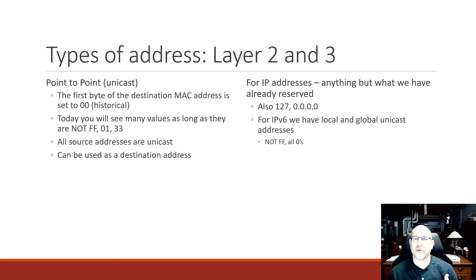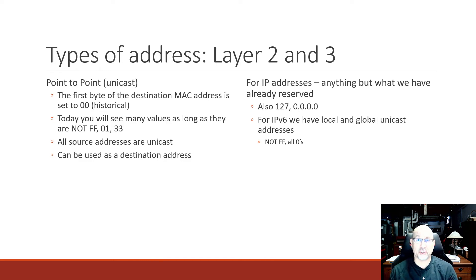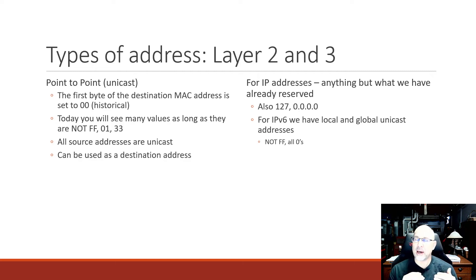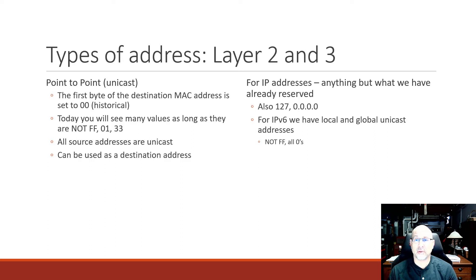Let's talk about unicast, sometimes referred to as point-to-point, because there are just two nodes involved in the conversation. For unicast MAC addresses, historically we used to say those begin with 00, and that was true for a long time, but we began to run out of vendor IDs — the first three bytes in a MAC address are the vendor code. Today you'll see any value in the first octet, as long as it's not one of the broadcast or multicast patterns. In IP addressing, whether IPv4 or IPv6, it's anything but the broadcast or multicast patterns — we won't see 255s at Layer 3, or things that begin with 224 to 239.